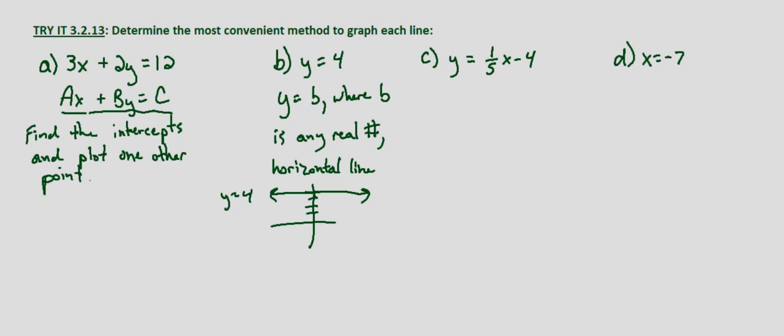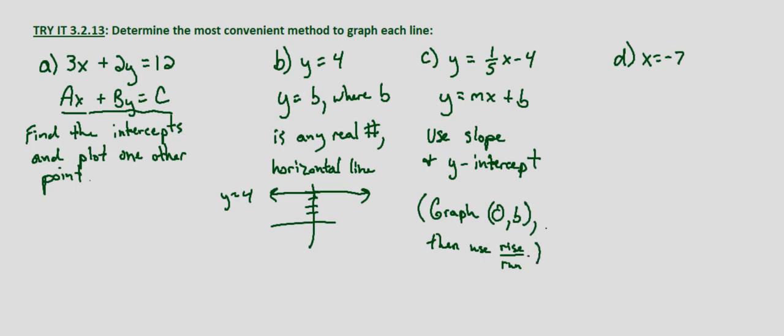Now with part c we're given y equals 1/5x minus 4. Well this is in the form y equals mx plus b if we just change the minus 4 to plus a negative. Since it's in slope intercept form, the most convenient method would be to graph the line by using slope and the y-intercept. So in other words, graph 0, b, then use rise over run. Similar to if we were given the slope and a point, we'd start at that point and then use the slope to determine the next point.